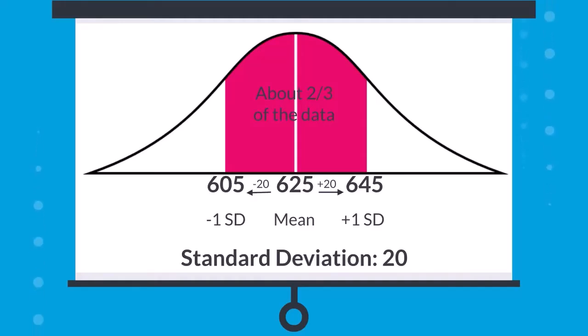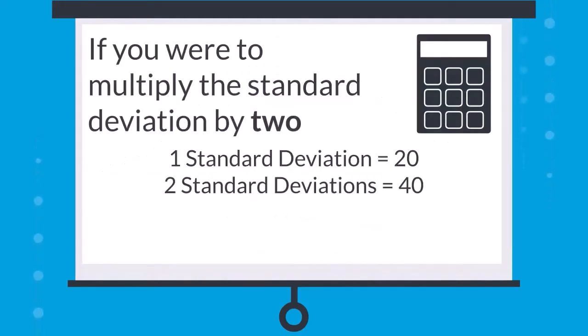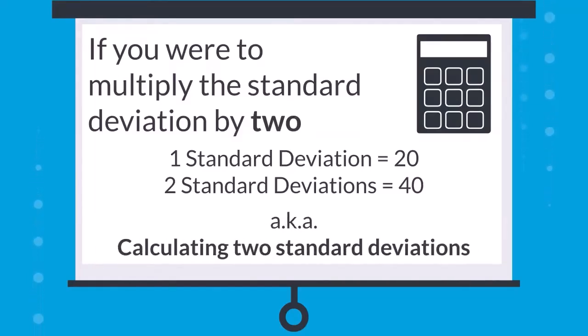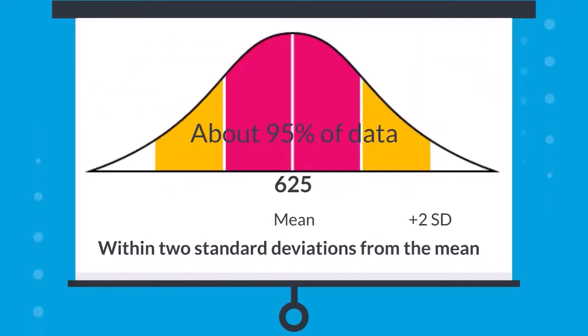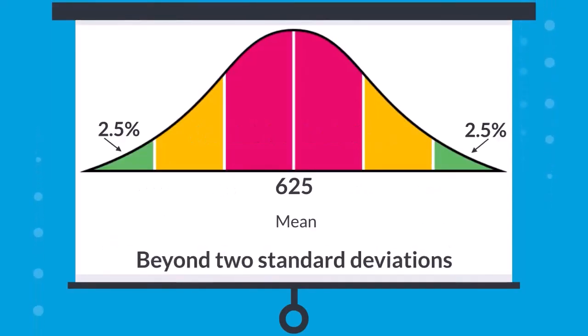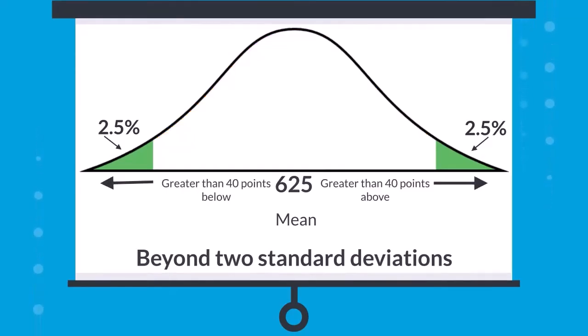If you were to multiply your standard deviation by two, also known as calculating two standard deviations, you would capture approximately 95% of all data. About 5% of the data are beyond two standard deviations, or greater than 40 points above and below the mean. These scores that are beyond two standard deviations are in the tails of the distribution. These students earned very low, or very high, scores compared to their peers.